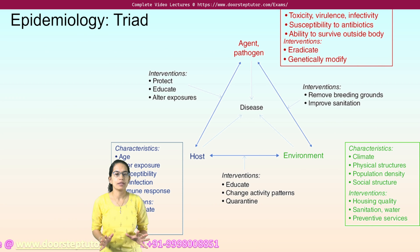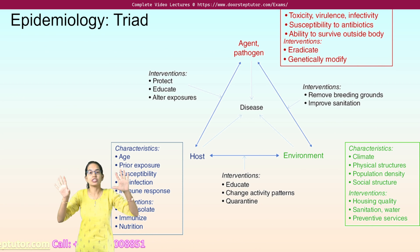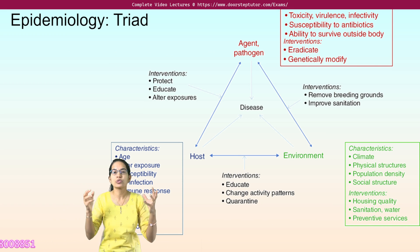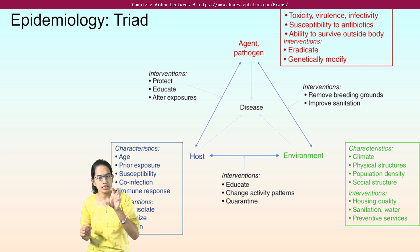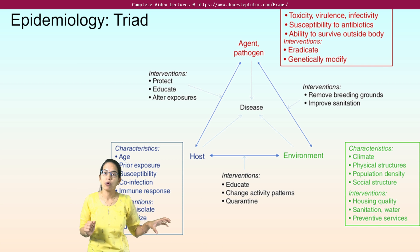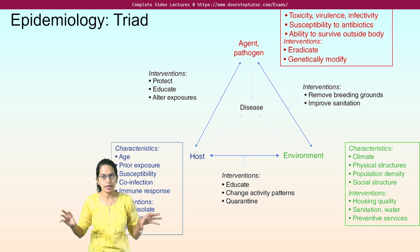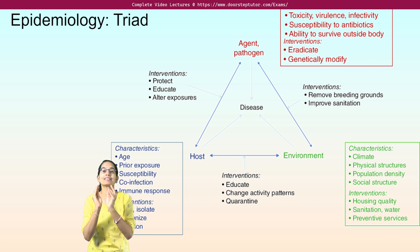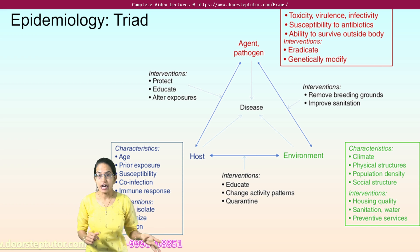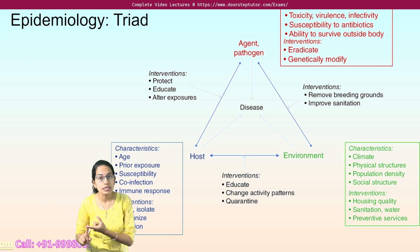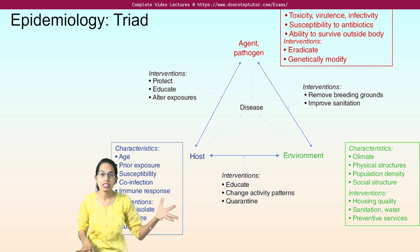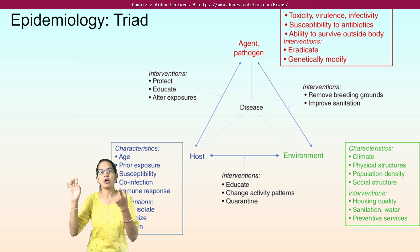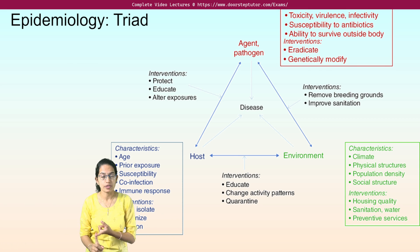To understand epidemiology, there is an epidemiological triad that includes three factors: the agent, the host, and the environment. The agent is the pathogen that causes the disease and has certain characteristics. For example, for arsenic, it could be the toxicity level; for vector-borne diseases like malaria, chikungunya, or dengue, we would talk about the virulence of that disease.